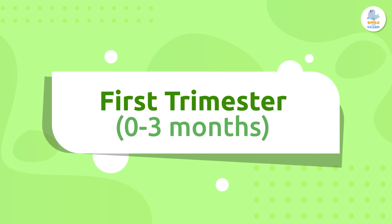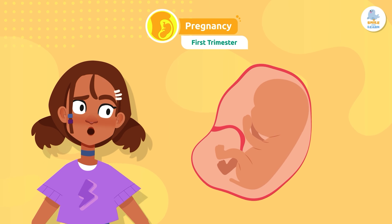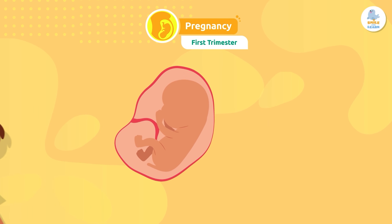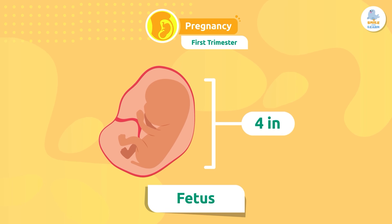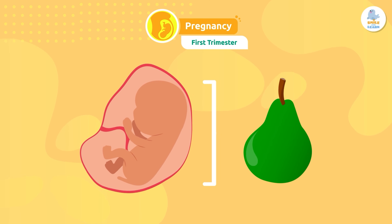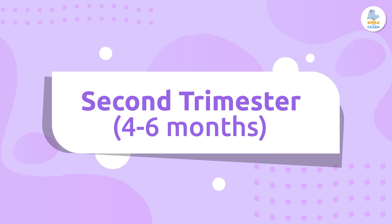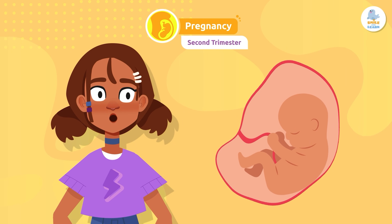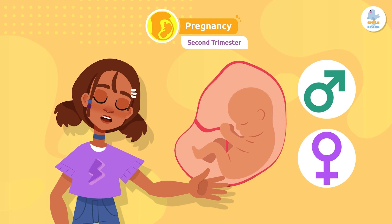First trimester: during the first trimester, the arms, legs, and main organs grow. At eight weeks, the embryo is called a fetus and is about four inches long. To give you an idea, at this point it's about the size of a pear.